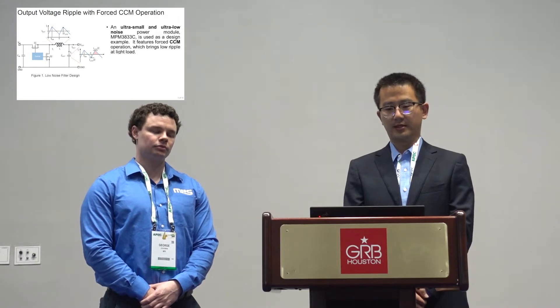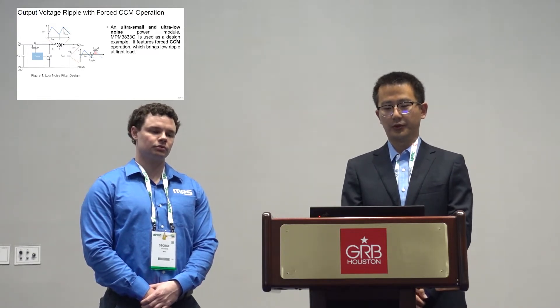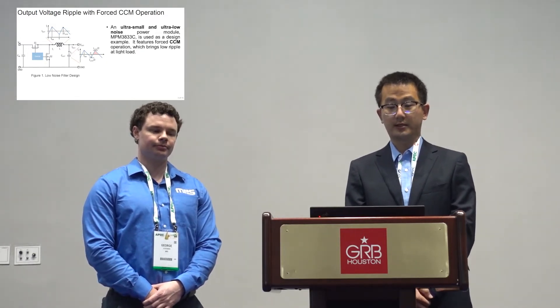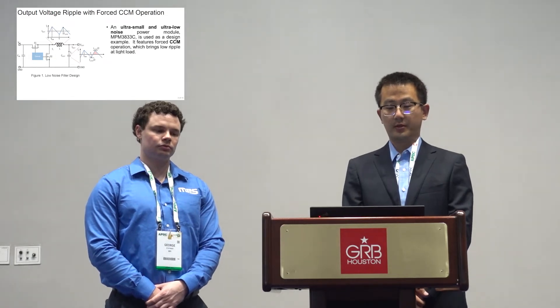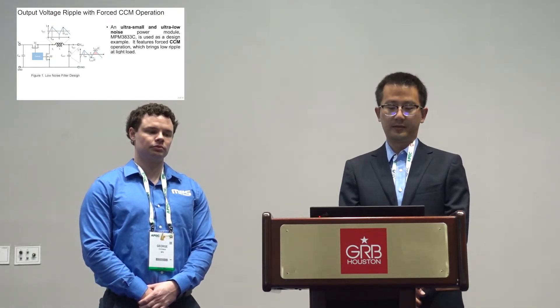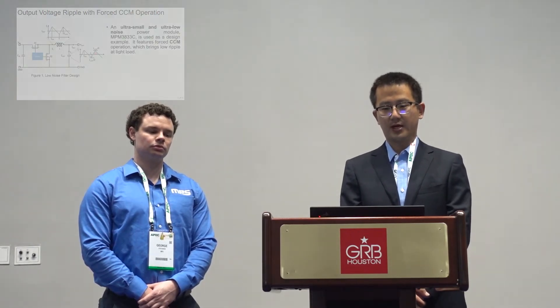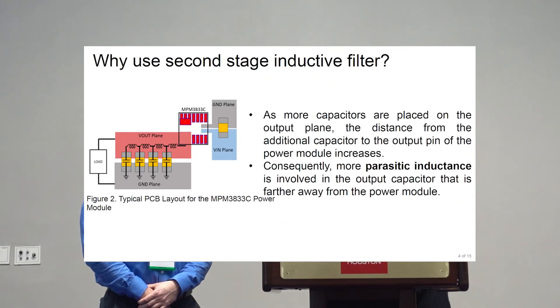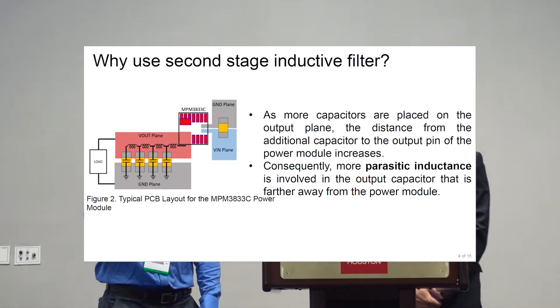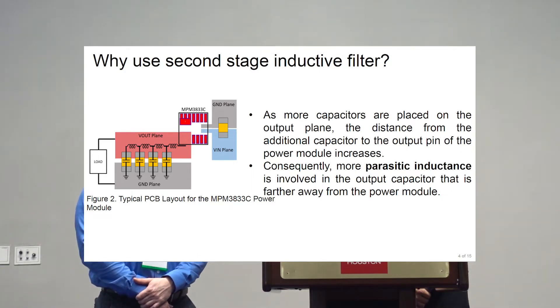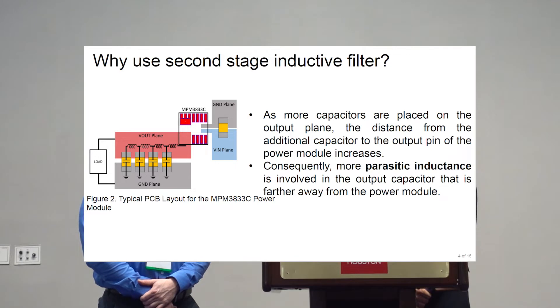If the output capacitor is large enough, we can basically entirely eliminate the output voltage ripple amplitude. But in practice, this is not the case. Firstly, we don't have a capacitor that can be placed close to our module with infinite capacitance.